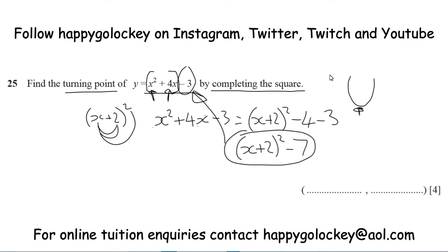Now to find the turning point. There are some rules when you see equations of graphs: anything inside the bracket is shifting, anything outside the bracket is lifting. When you've got a positive inside the brackets, like we do here, we're shifting to the left. If it's negative, we'd shift to the right. And when we're outside, we are lifting if it's a positive number, or going down — de-lifting — when it's a negative.